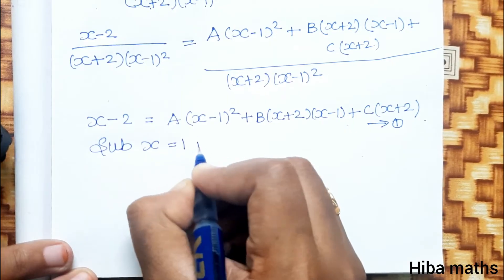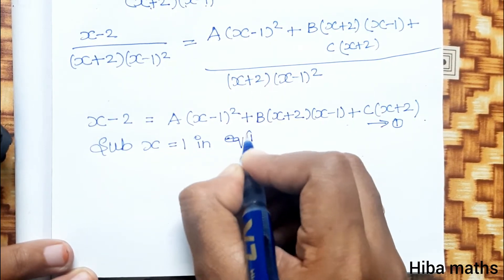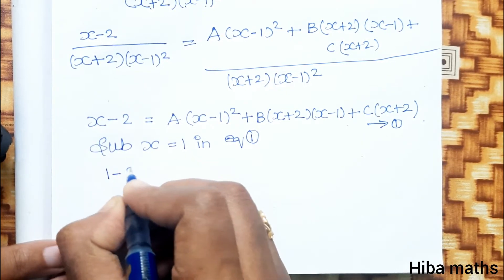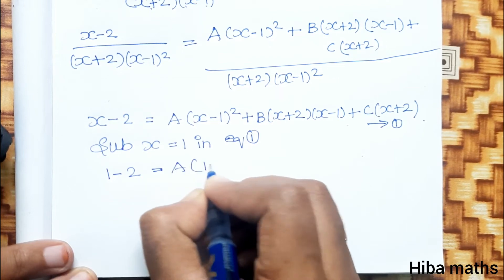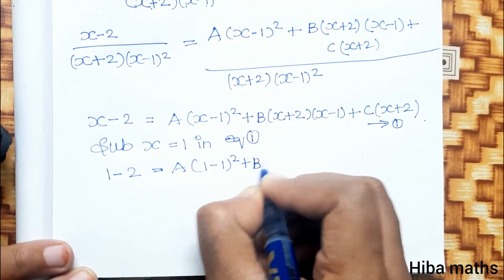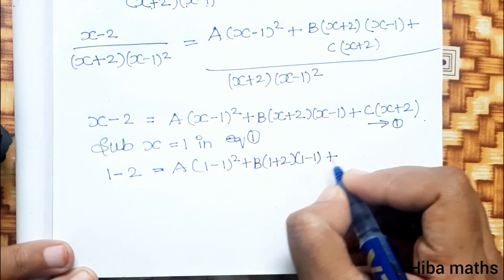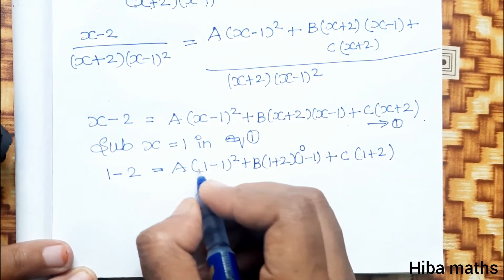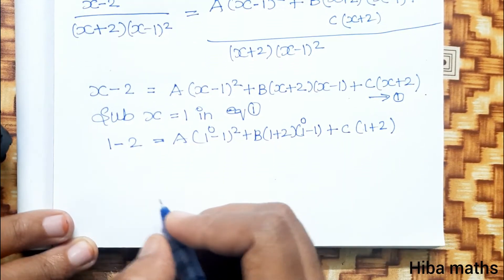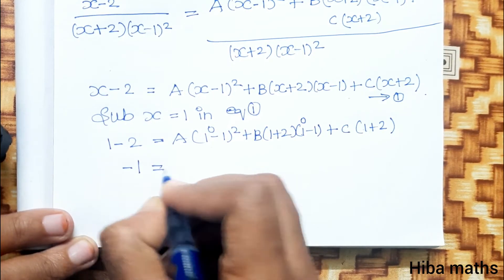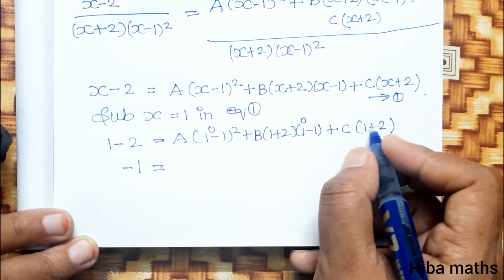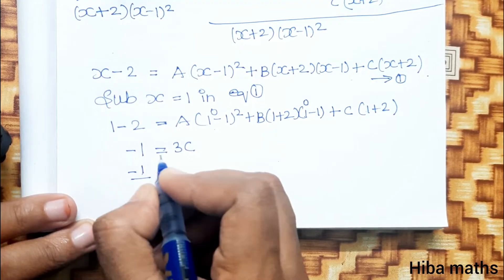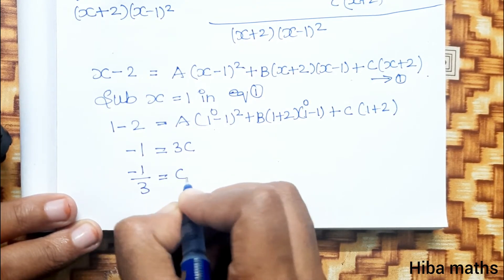Substitute x equal to 1 in equation 1. We get: 1 minus 2 equals A into 1 minus 1 whole square plus B into 1 plus 2 into 1 minus 1 plus C into 1 plus 2. The first two terms become 0. So minus 1 equals 3C, therefore C equals minus 1 by 3.